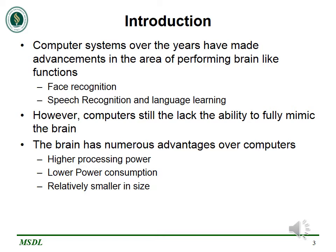Computer systems over the years have made advancements in the area of performing brain-like functions. Back in the 20th century, no one would believe that it was possible for computers to recognize the face of an individual. But computers perform more than that. Modern computers have the ability to recognize speech and learn the language of humans. However, computers still lack the ability to fully mimic or imitate the human brain.